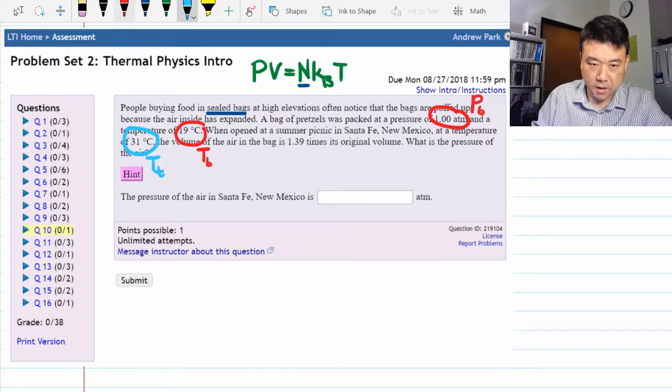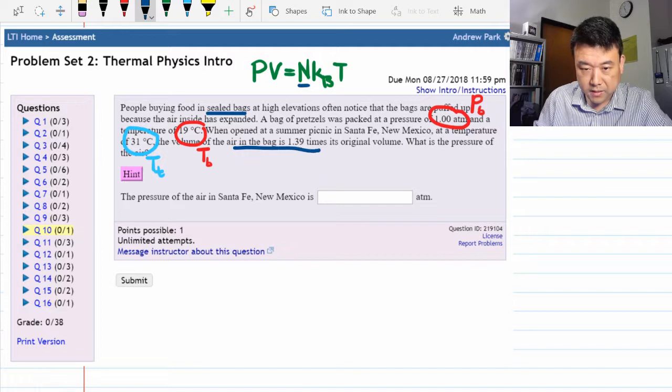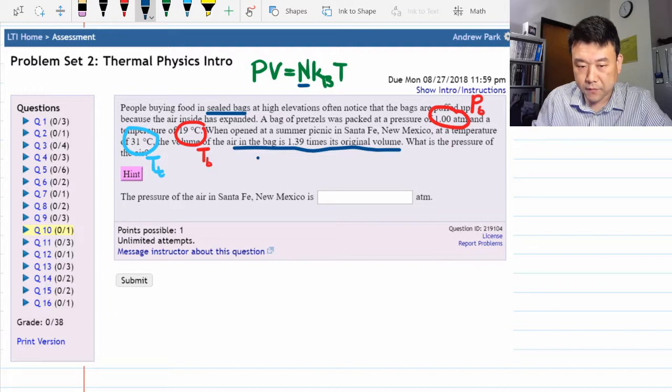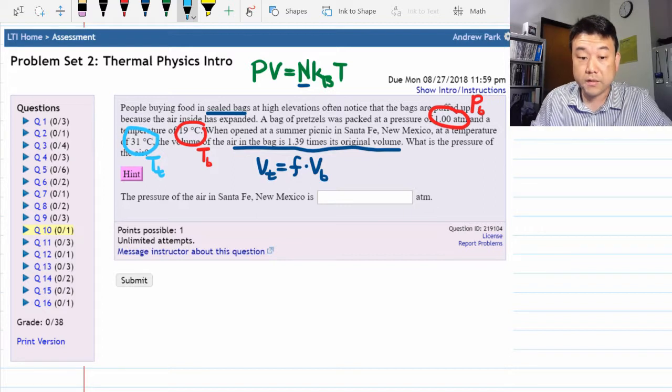The volume of the air in the bag is 1.39 times its original volume. This is a bit odd way of giving you the information. So let me write it up. What it's telling you is that the volume of the air in the bag at the top, V top, is equal to some multiplicative factor F times volume at the bottom.